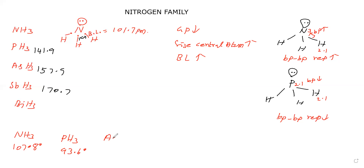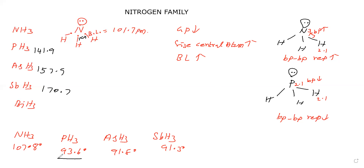In arsine, the bond angle is 91.8 degrees. In stibine, the bond angle is 91.3 degrees. So bond angle decreases down the group. In phosphine, arsine, and stibine, the bond angle is approximately 90 degrees.